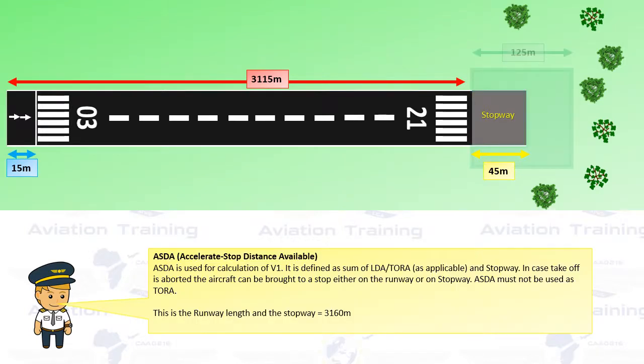Accelerate Stop Distance Available is used for calculations of V1. It is defined as the sum of landing distance available and takeoff run available, if applicable, and a stopway. It is the case where an aborted aircraft must be able to be brought to a stop either on the runway or the stopway. ASDA must not be used as TORA.